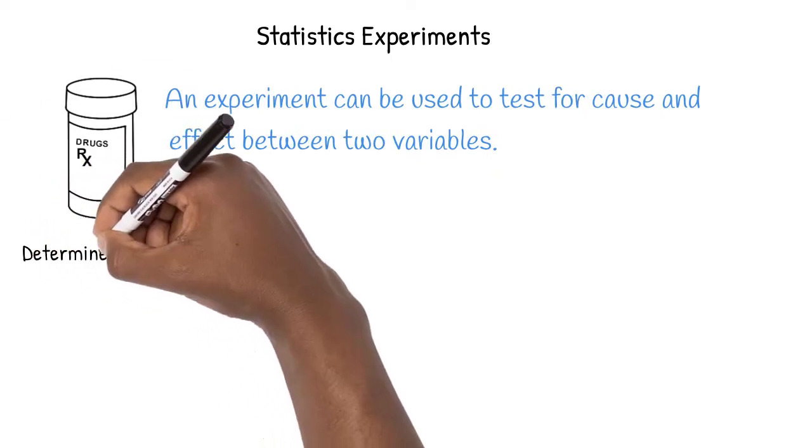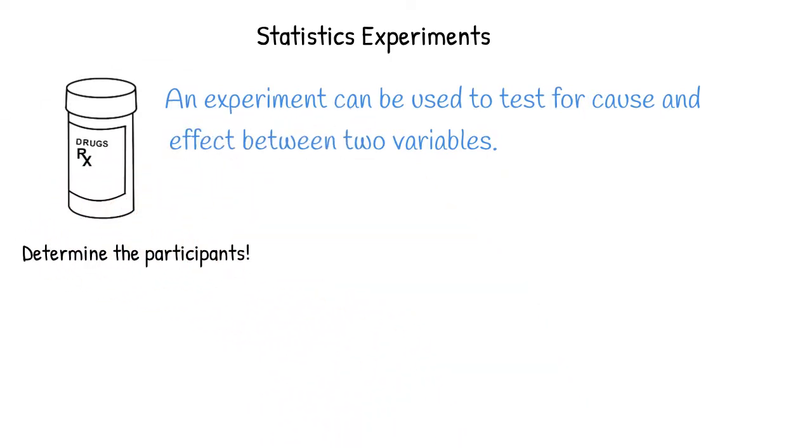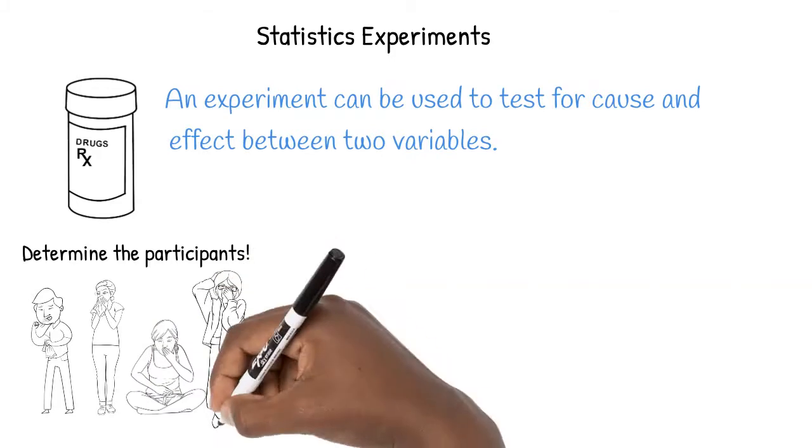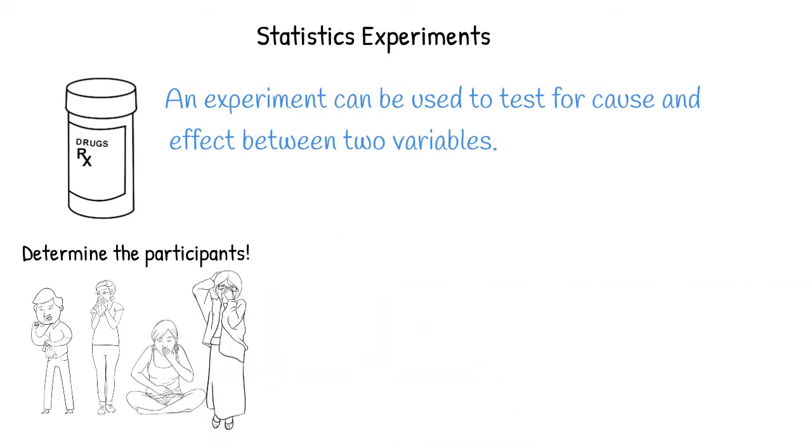For an experiment, we need to determine our participants. Let's say we want to check the efficacy of a cold medication. In other words, does the medication do what it is intended to do? We select several people to run the experiment on. These people are called participants.